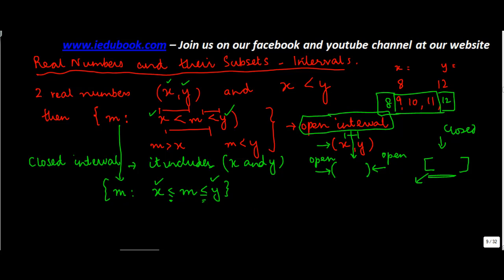Now you can have one-sided interval also where you write [x, y) so it is closed from this side and open from this side, which means if you write m, x is included in m but y is not.